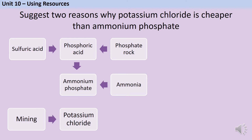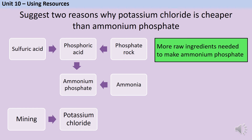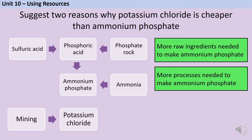There aren't a huge number of facts to memorise about NPK fertilisers, which means you'll likely get a question asking you to suggest or evaluate. An evaluate question is a compare-and-contrast one, whereas a suggest question asks you to come up with an idea — applying your knowledge rather than recalling a learnt fact. For example, you might be asked to suggest two reasons why potassium chloride is cheaper than ammonium phosphate, given flow charts showing how each is made. The first thing you'll notice is that ammonium phosphate requires more raw ingredients — three starting materials versus one for potassium chloride. The second is that it's a much more complicated process, which tends to be time-consuming and costly.